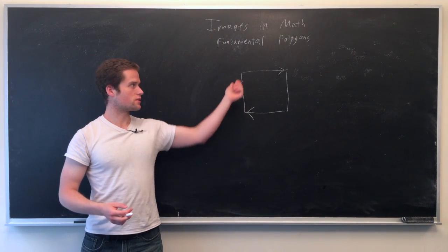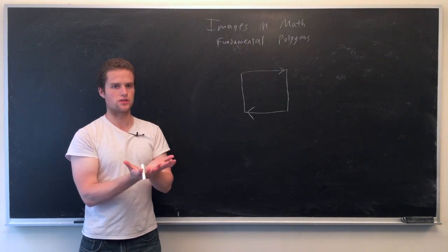So take a square, if we just identify two sides together, we just put two sides together, we just have a loop.